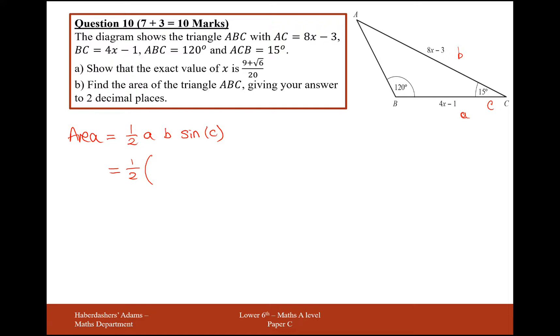So half times, now A is 4 lots of 9 plus root 6 over 20, take away 1. B is going to be 8 times 9 plus root 6 over 20, take away 3. And then it's going to be times by sine of 15. I'm going to get the calculator out, put all of that into your calculator all in one go, and it's going to be 0.26 to two decimal places. That's 10 marks for that question. Thank you.